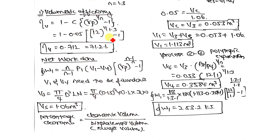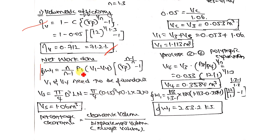The net work done formula is: W = (n / (n−1)) × p1 × (v1 − v4) × (rp^((n−1)/n) − 1). You know all the values except v1 and v4, so these need to be calculated one by one.